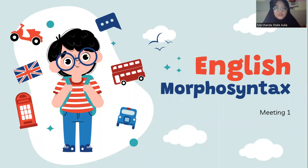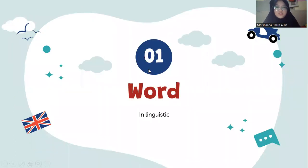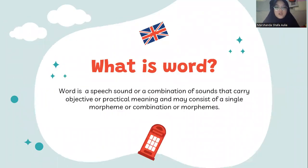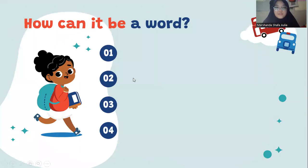Hello everyone, today we are going to talk about some materials from our first meeting on English morphosyntax. The first topic is word in linguistic context. A word is a sound or a combination of sounds that carries objective or practical meaning and may consist of a single morpheme or a combination of morphemes. How can something be a word? First, it has meaning.